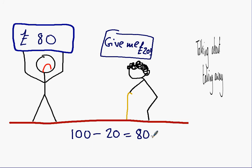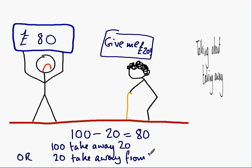We can see what's happening there with the maths. But to explain that in English, we need to say, 100 take away 20. Or, we need to say, 20 take away from 100.